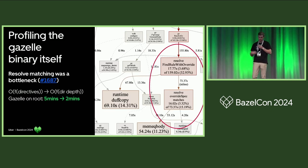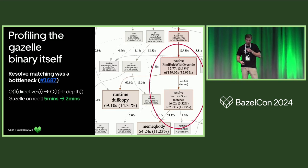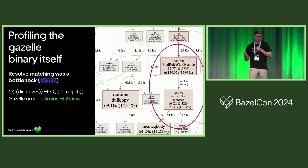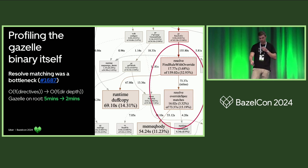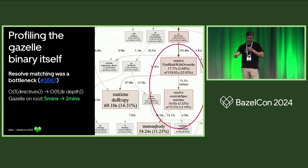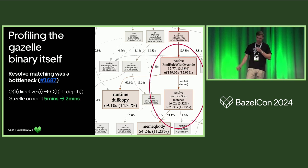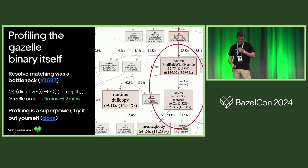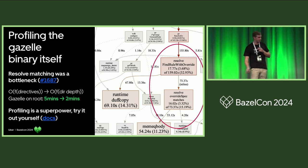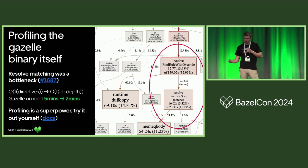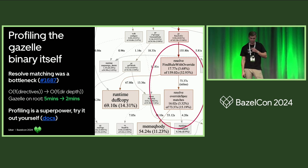Next, we profiled the Gazelle binary itself. This was done by using a flag which we upstreamed. We were able to find some inefficiencies, upstream fixes, and reduce the running from root from five minutes to two minutes — which was a huge win. Try it yourselves; you might have different bottlenecks than we did. I highly recommend you do this. I think Aspect also did some of this, and it's very valuable.